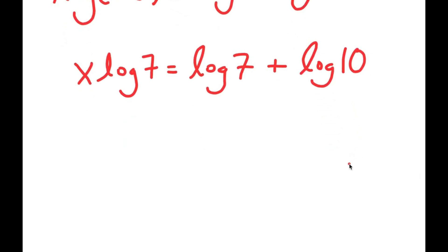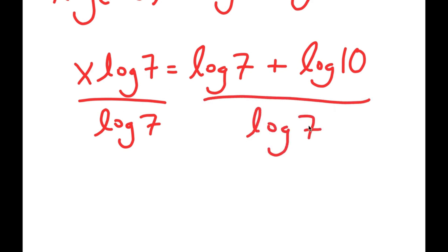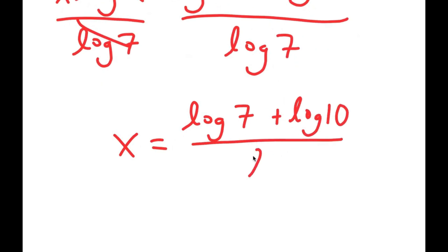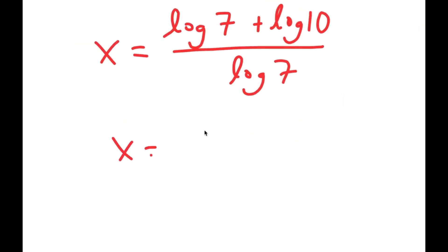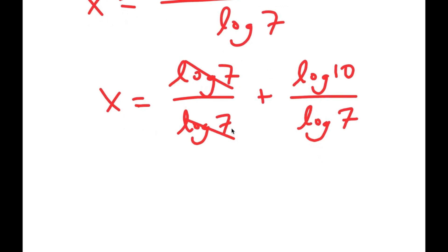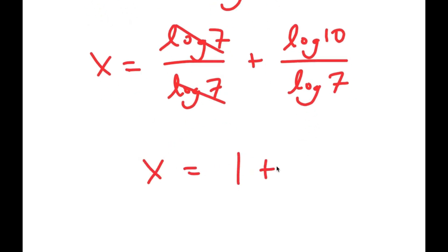From here, what I'm going to do is divide both sides by log 7, because we want to isolate x. So these cancel out and I get x is equal to log 7 plus log 10 over log 7. I can rewrite this as log 7 over log 7 plus log 10 over log 7. Now log 7 over log 7 cancels, so I get x is equal to 1 plus log 10 over log 7.